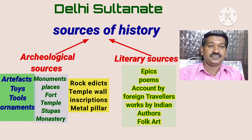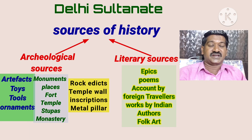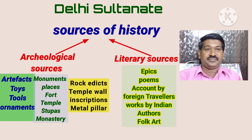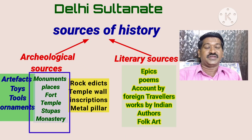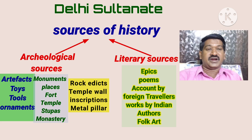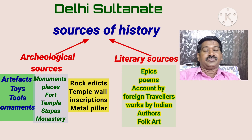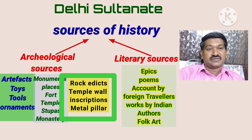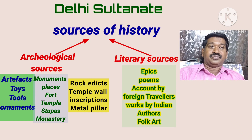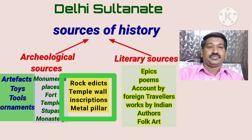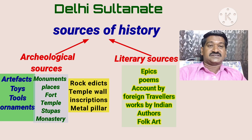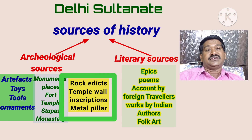Monuments is the second archaeological source. Forts — how the kings constructed them on those days, which type of places and temples they constructed — by studying these things they wrote the history. Rock edicts: historians on those days carved the rocks, carved on the temple walls, carved inscriptions, and constructed pillars. By studying those inscriptions and rock edicts, historians wrote the history.